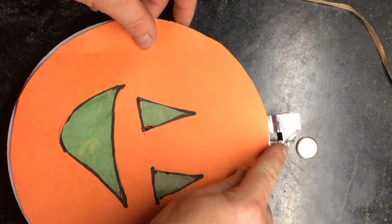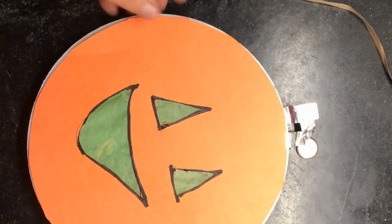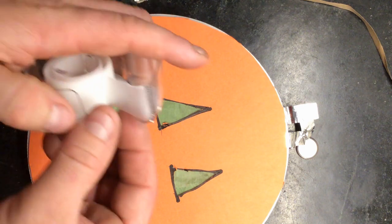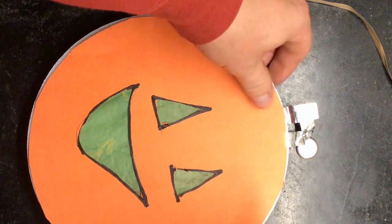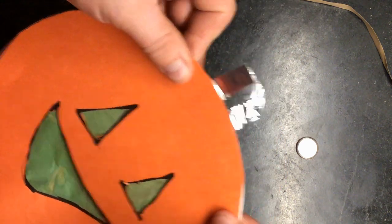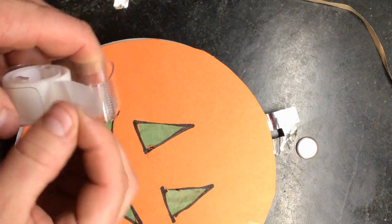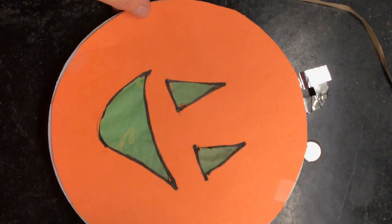Now I'm almost done. So I'm going to make sure that the stem of my pumpkins up top, put my face on my jack-o'-lantern. Now just use a couple pieces of tape to make sure that my face stays on the plate, covers up my LED light. Now it's time to give this thing a test run.